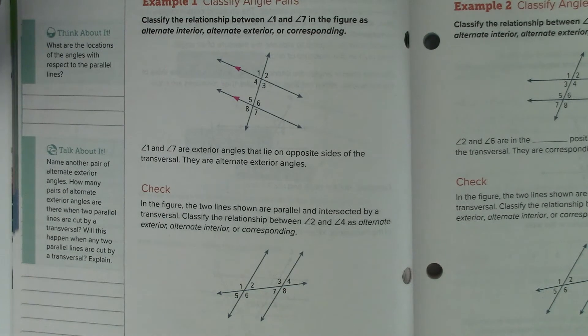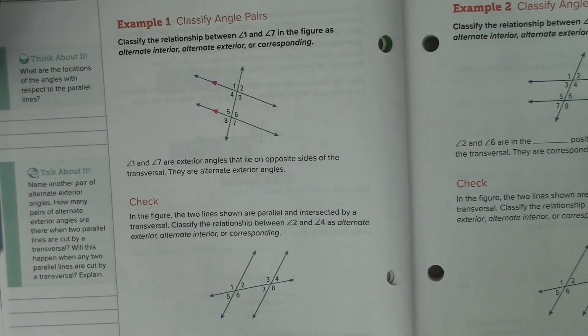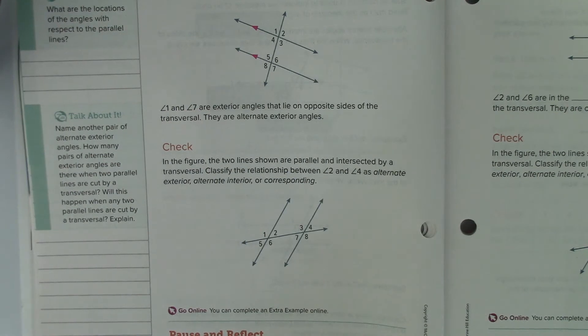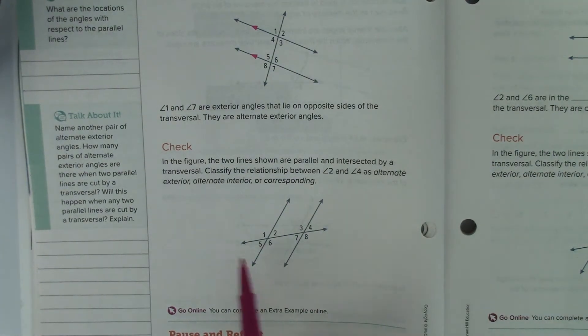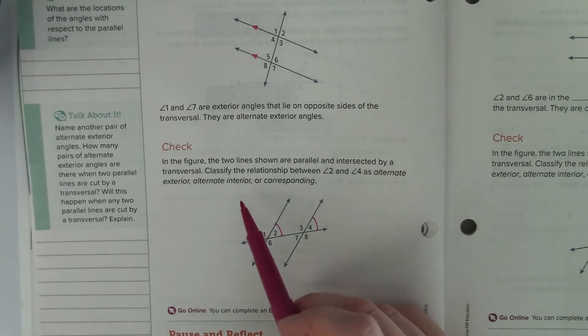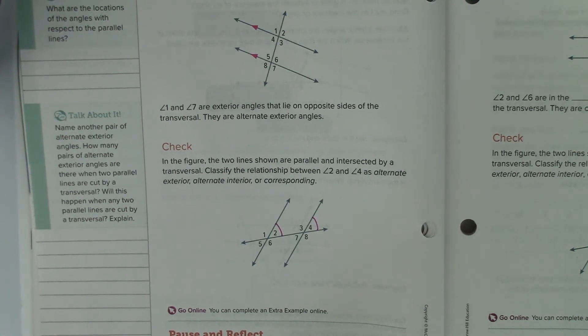Everybody go to page 384 in your book. Okay, hopefully everybody is to page 384. We are going to do the check problem on the bottom of page 384. In this figure, the two lines shown are parallel and they're intersected by a transversal. Classify the relationship between angle 2 and angle 4. Is it alternate exterior, alternate interior, or corresponding? Pause the video, raise your hand when you have circled the right answer, and Mrs. B is going to come around and check your work.